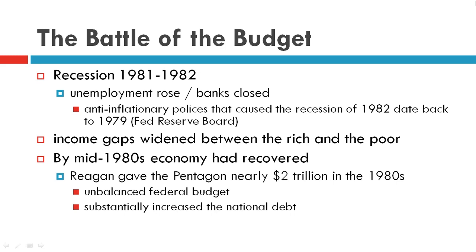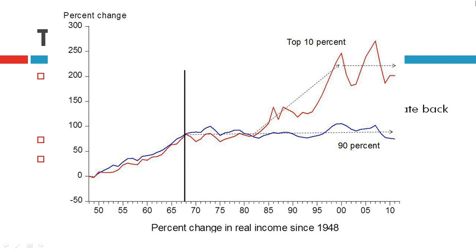By the mid-1980s, the economy had recovered. Economists speculated that it had recovered because of Reagan's massive military expenditures — Reagan gave the Pentagon nearly $2 trillion in the 1980s, which unbalanced the federal budget and substantially increased the national debt.